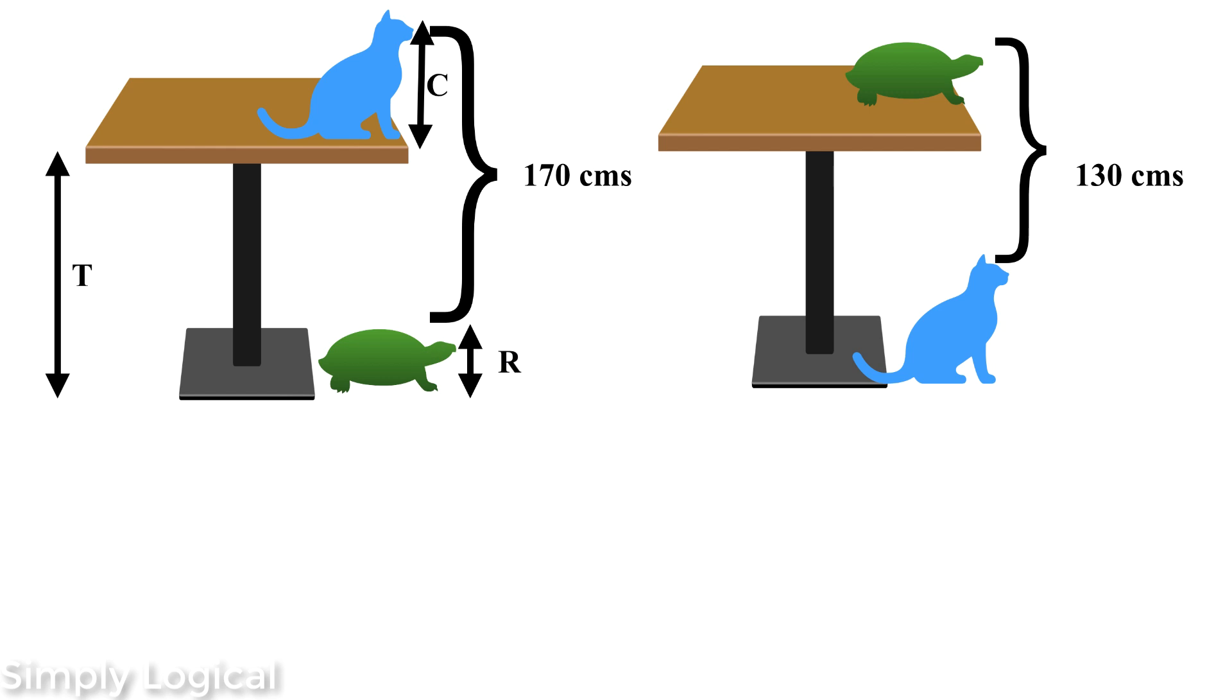Let's write down the equations by observing the diagram. As per the first diagram, total height of the table along with cat, excluding the tortoise height, can be written as T plus C minus R equals 170 cm. So here T is the height of the table, C is the height of the cat, and R is the height of the tortoise. Since the height of the tortoise is not included in the diagram, we are excluding it by subtracting R, which is resulting in 170 cm.